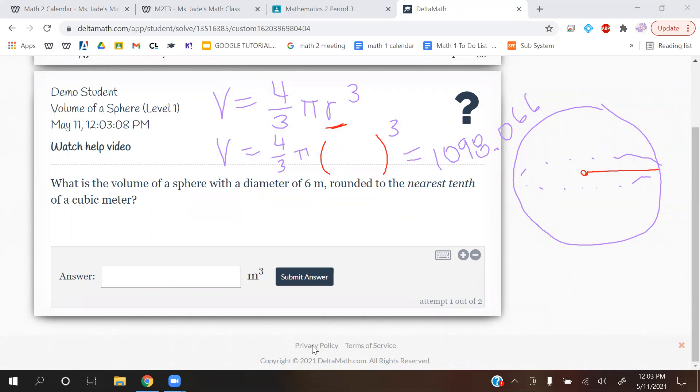Okay. So the formula stays the same. It's still 4 thirds pi r cubed. They give us that. We have a diameter of 6 meters. Remember, we don't want the diameter. We want the radius. Radius is what's in our formula.